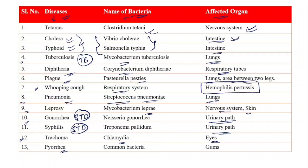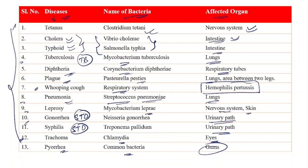Syphilis is also a sexually transmitted disease like HIV. It is caused by Treponema pallidum and it also affects the urinary part. Number thirteen: Pyorrhea is caused by common bacteria and it causes disease in the gums. These are the few diseases caused because of bacteria — there are many more, but these are the important ones which have been seen in competitive examinations.